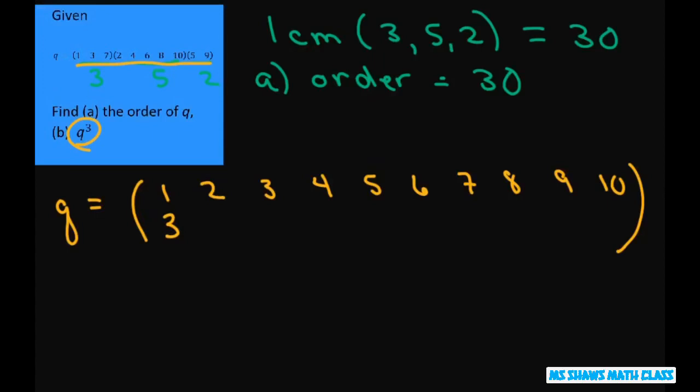So 1 maps to 3, 3 maps to 7, 7 maps back to 1.